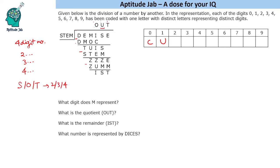If S were 5 — say 5000-something — and we multiply by the minimum of 2, we get greater than 10,000, which is a five-digit number. So S cannot exceed 4. S can be at maximum 4.